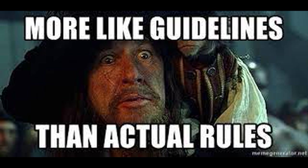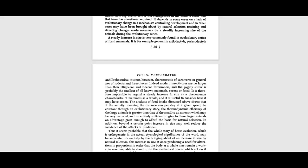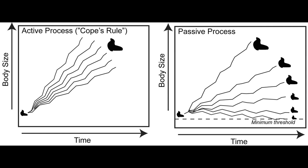Of course, the counterexamples to this so-called rule are numerous. British zoologist D.M.S. Watson writes: 'A steady increase in size is very commonly found in evolutionary series of fossil mammals. It is, for example, general in artiodactyls, perissodactyls, and proboscidea. It is not, however, characteristic of carnivores in general, nor in rodents and insectivores. Indeed, modern insectivores are no larger than their Oligocene and Eocene forerunners, and the pygmy shrew is probably the smallest of all known mammals, recent or fossil. It is therefore impossible to regard a steady increase in size as a phenomenon characteristic of mammals as a whole.' Rather than organisms inexorably increasing in size, they can only increase as allowed by their particular environmental and genetic situation.